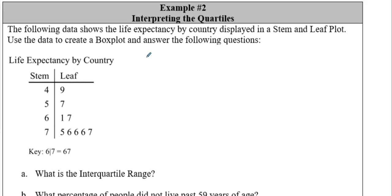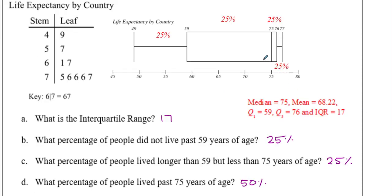The last example involves life expectancy by country. Here is the box plot: a low of 49 and a high of 77. It looks like we are skewed left. The IQR is 17. The percentage of people who did not live past 59 is 25%. The percentage who lived longer than 59 but less than 75 is also 25%. Those who lived past 75 — from 75 to 77 — represent 50% of the data.